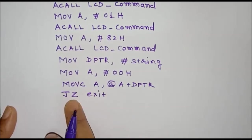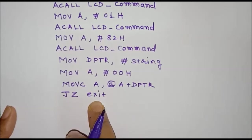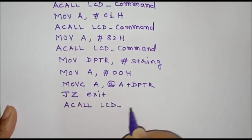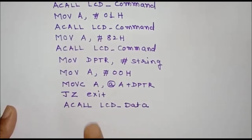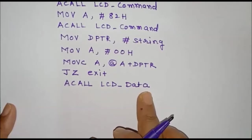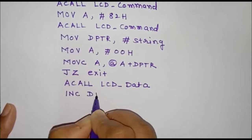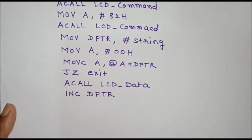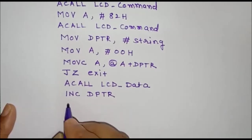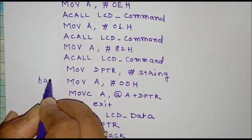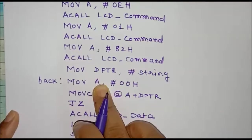If the accumulator is not 0, meaning it is not the end of the string, we call the subroutine LCD_data. The accumulator content — the ASCII value of the character — will be written to the data register and displayed on the LCD. After displaying one character, we increment DPTR to point to the next character. We give the label 'back' to the instruction that re-initializes the accumulator to 0, forming the loop.